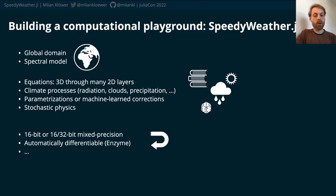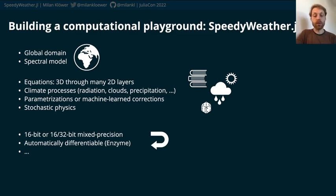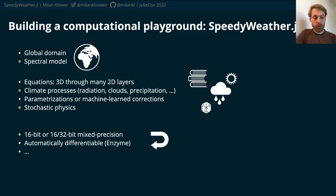In order to make the whole model more realistic with, for example, machine-learned corrections, it would also be really nice to have it automatically differentiable. So you could use frameworks like Enzyme in order to fit certain parameters, learn neural networks based on the model, and so on and so forth.